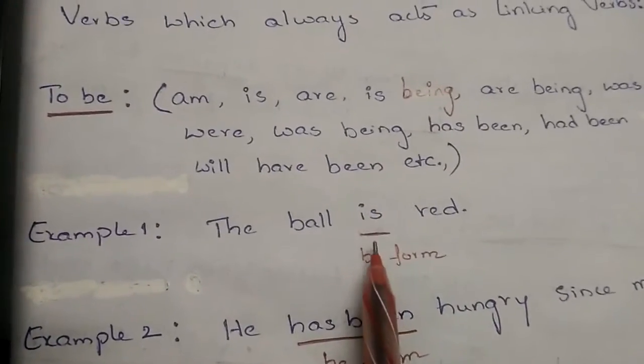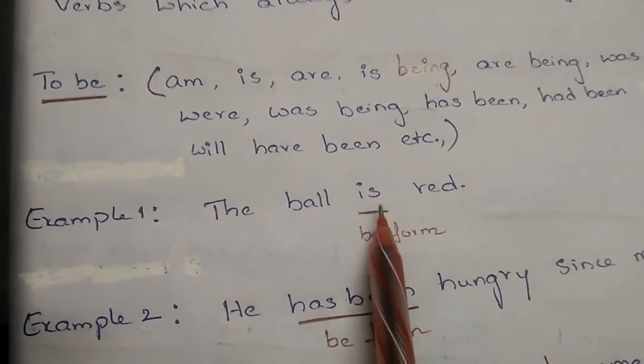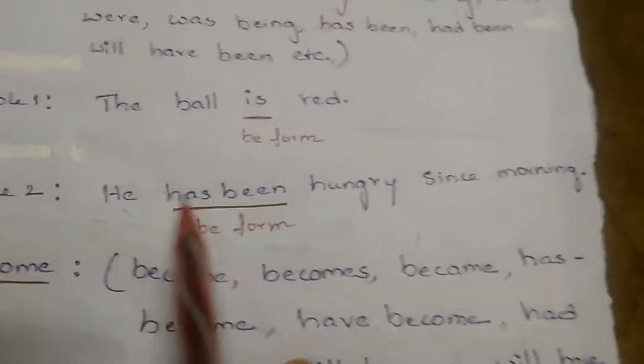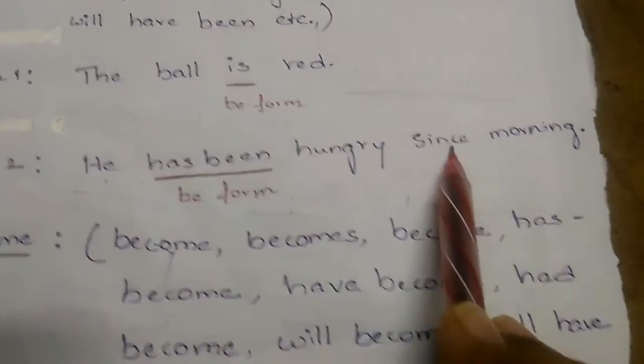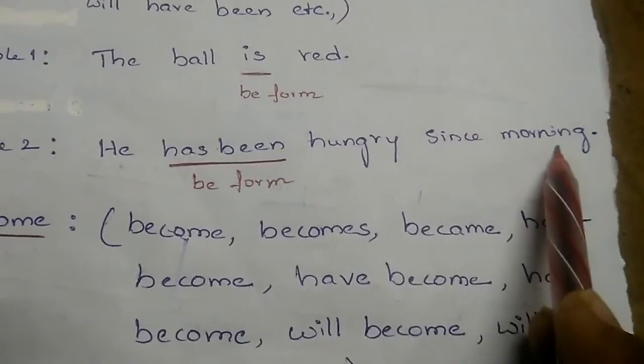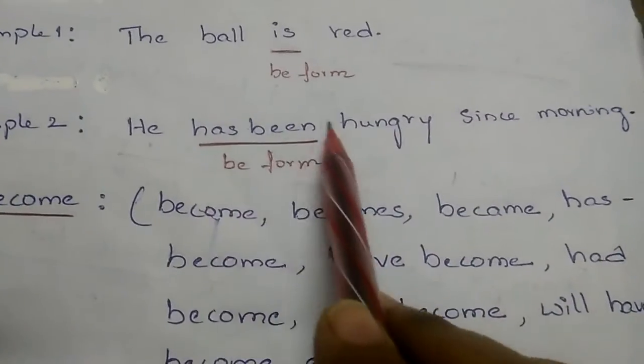Is is the B form, and we have only one verb, and this is acting as a linking verb. You see the second example: He has been hungry since morning. Has been is also a B form.